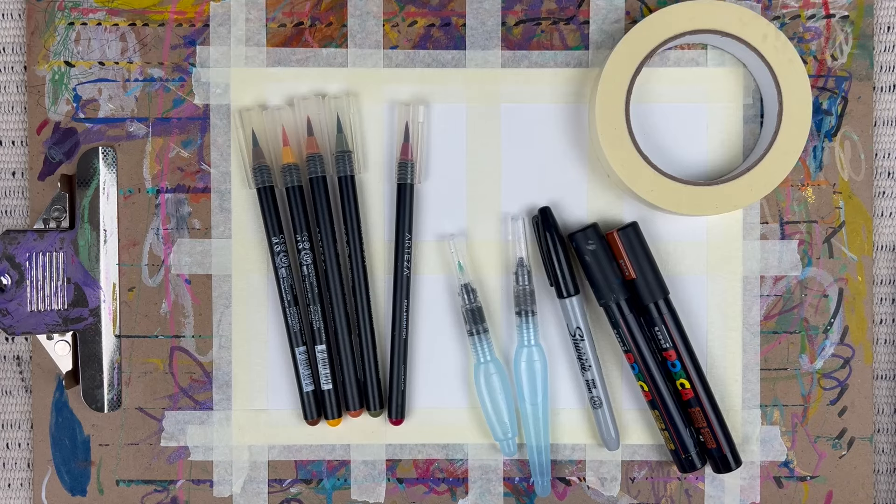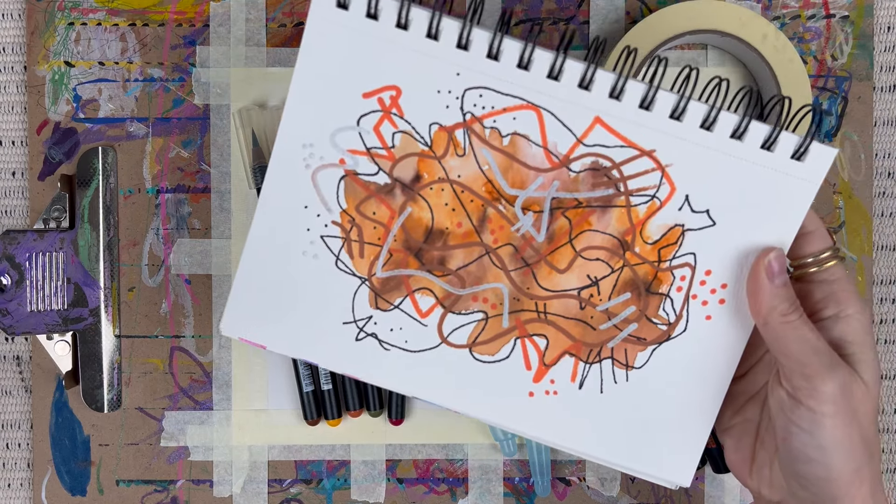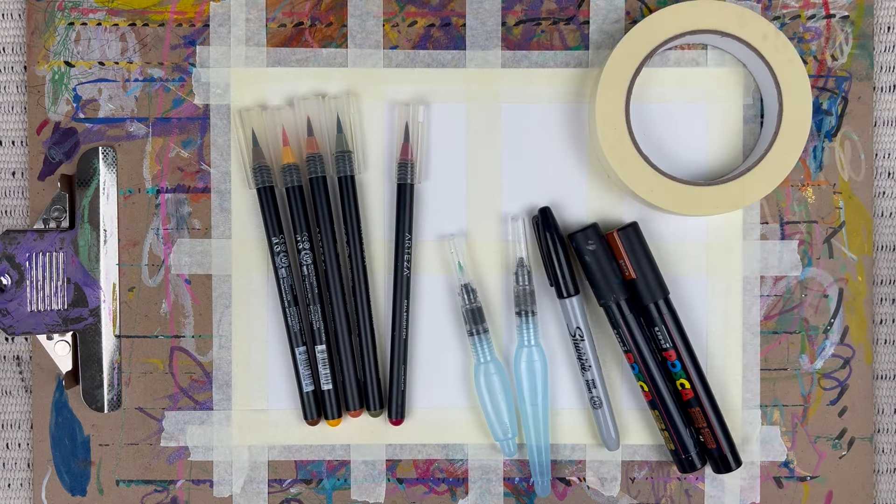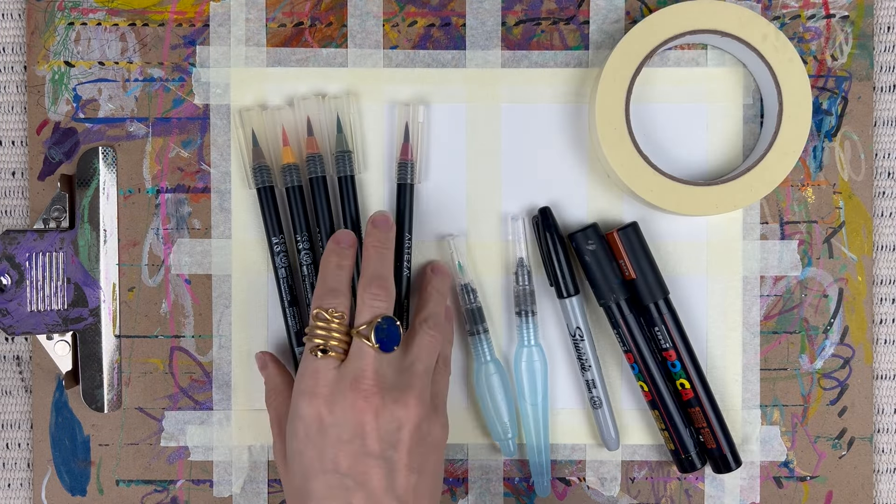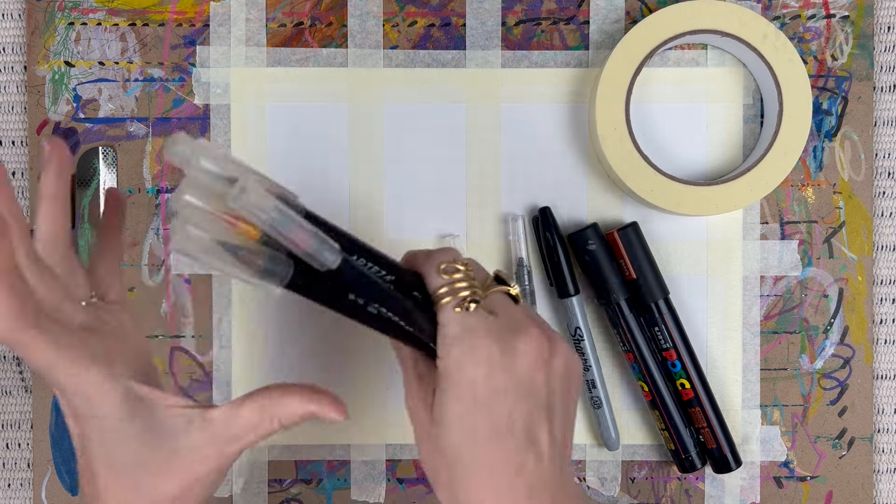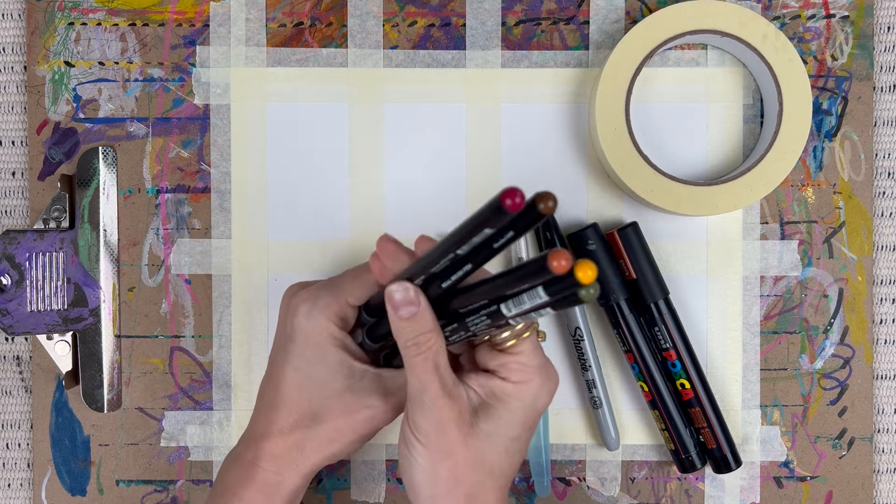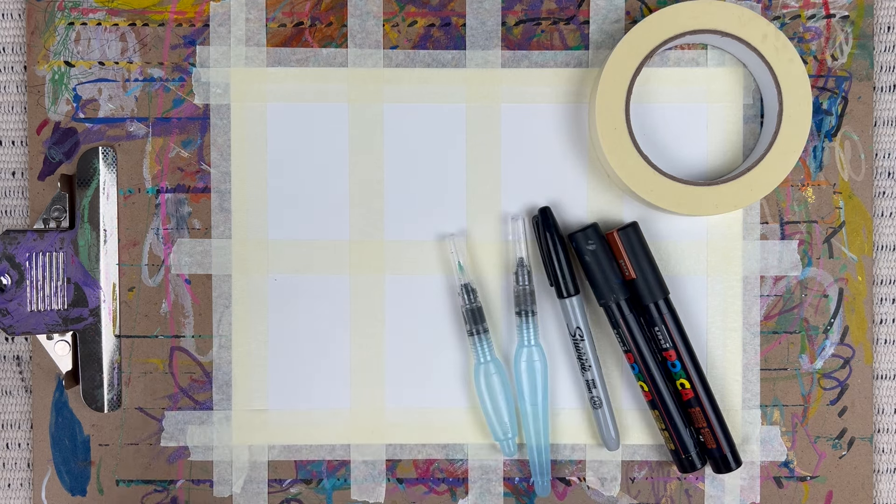Let's do a grid art meditation in the scribble blob technique, as you see here. So for supplies, I have my Arteza watercolor brush pens, or they're called real brush pens. We're doing a fall color palette today.